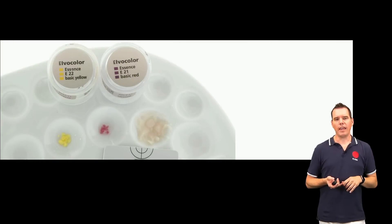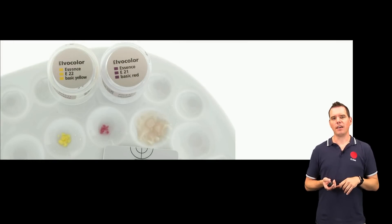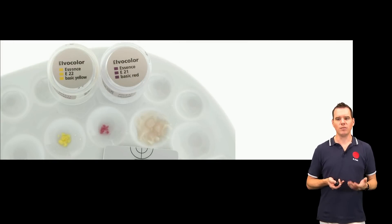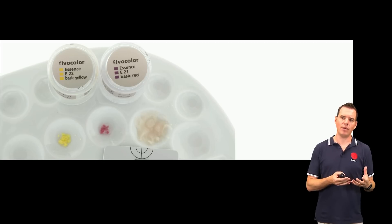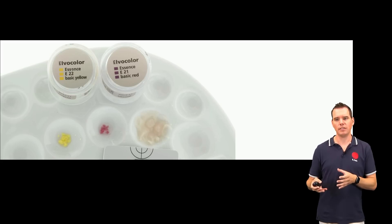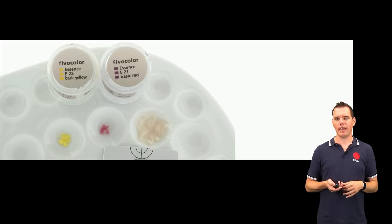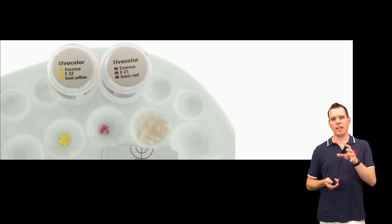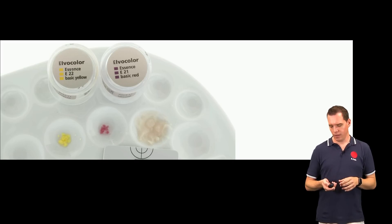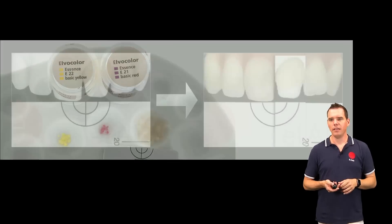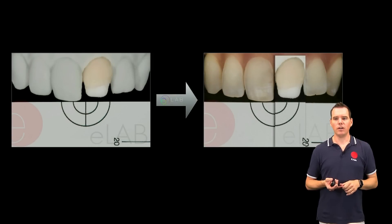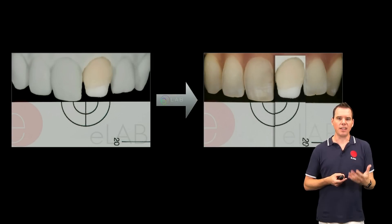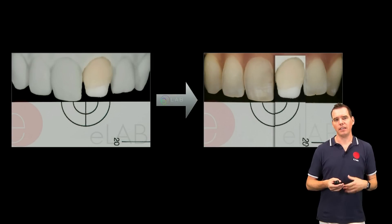In the next step you take the closest dentin color of your ceramic system and mix it with a visualized liquid, which makes the color of the ceramic visible before you fire it. Then by using two types of stains — a yellow and a red — you adjust the amount of chroma accordingly and layer this mixture onto your framework.